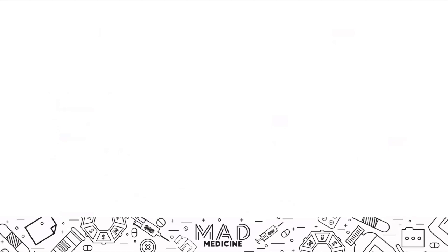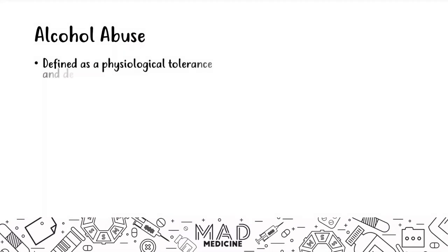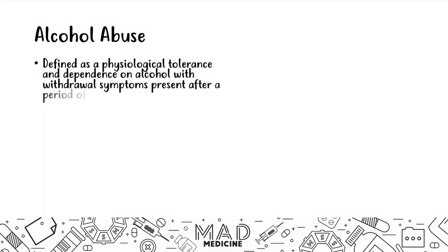Alcohol abuse is different from alcohol intoxication. Alcohol abuse is defined as having a physical or physiological tolerance and dependence — you have to be both dependent and tolerant on alcohol. Withdrawal symptoms should also present after a period of interrupted intake. They are tolerant, so they need higher doses, and without alcohol intake they will go through withdrawal symptoms.